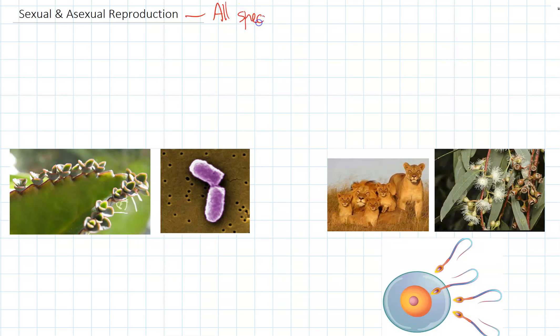So all species reproduce so that they can continue their species' survival. And what's happened is there are actually two different ways for species to reproduce. These are called asexual reproduction and sexual reproduction, and we'll look at these two now and compare the similarities and the differences.